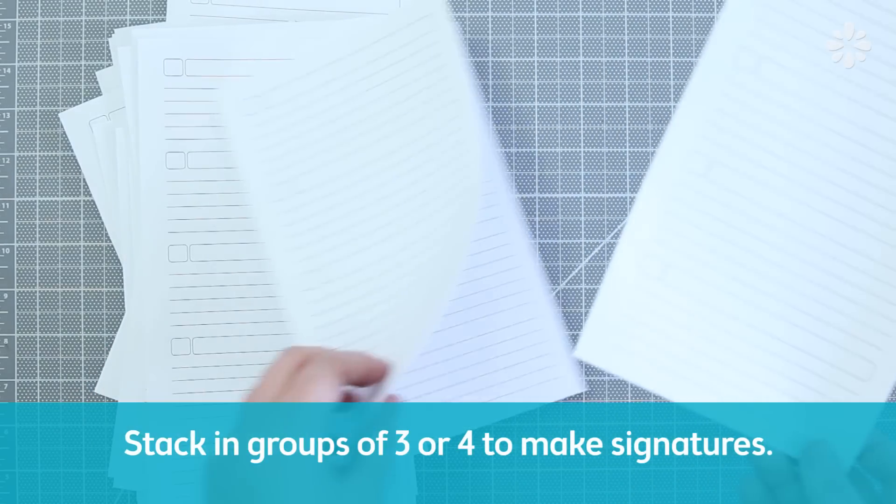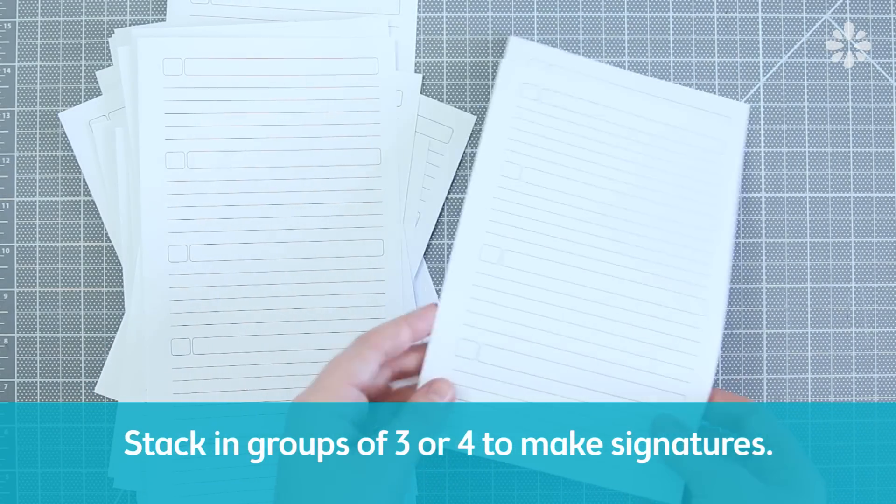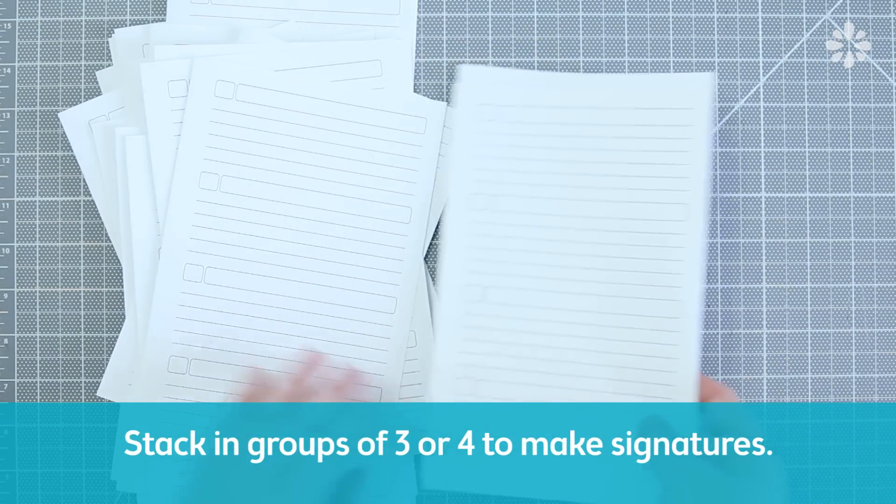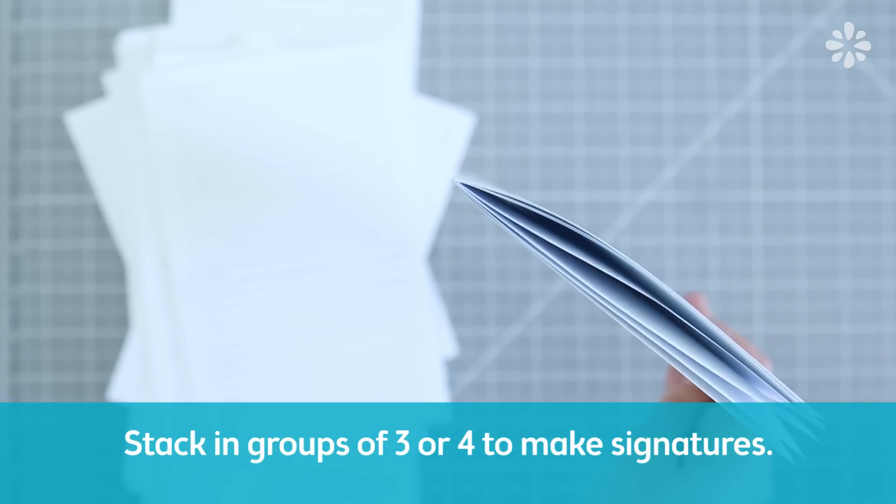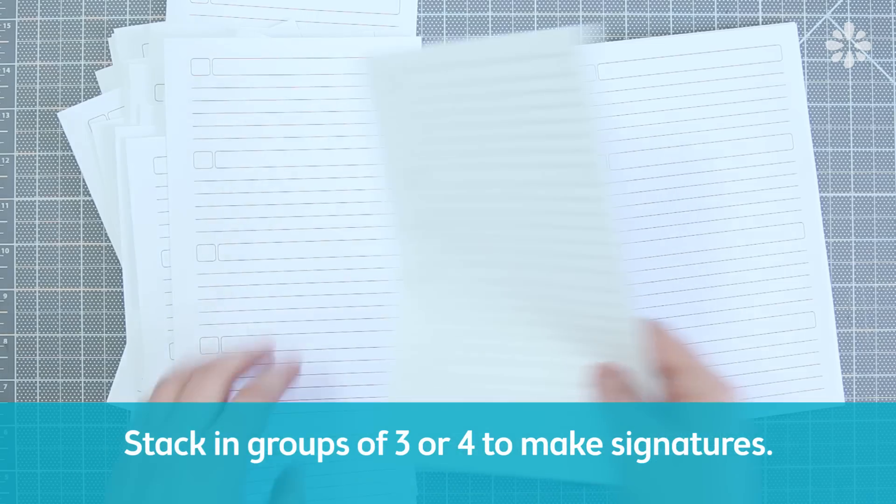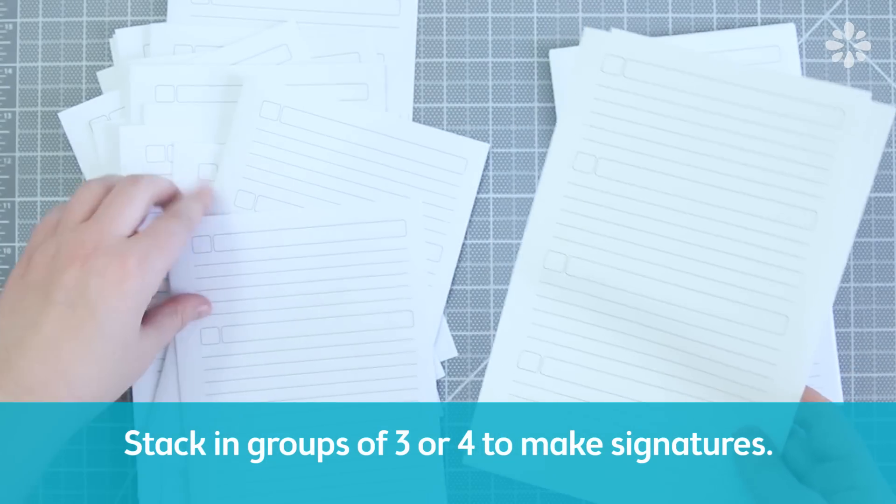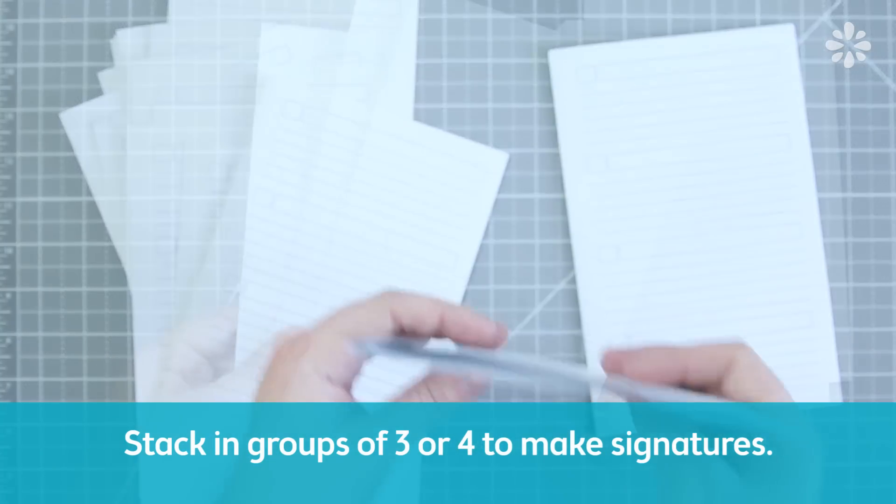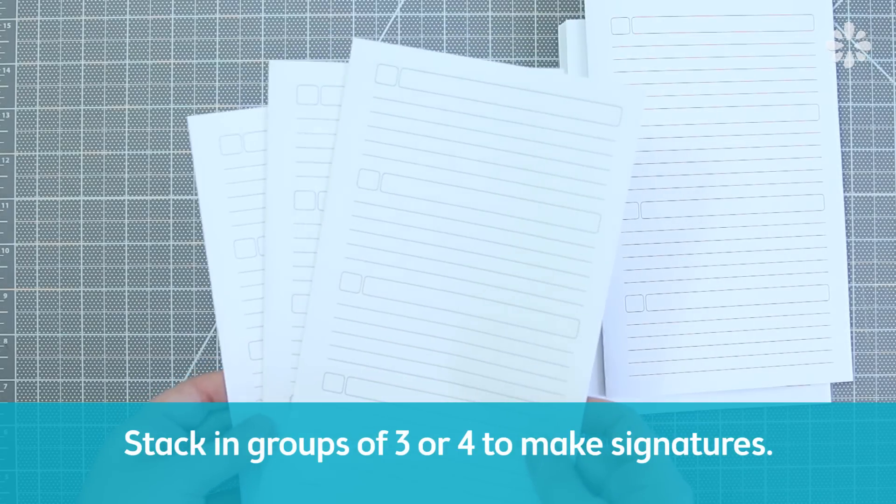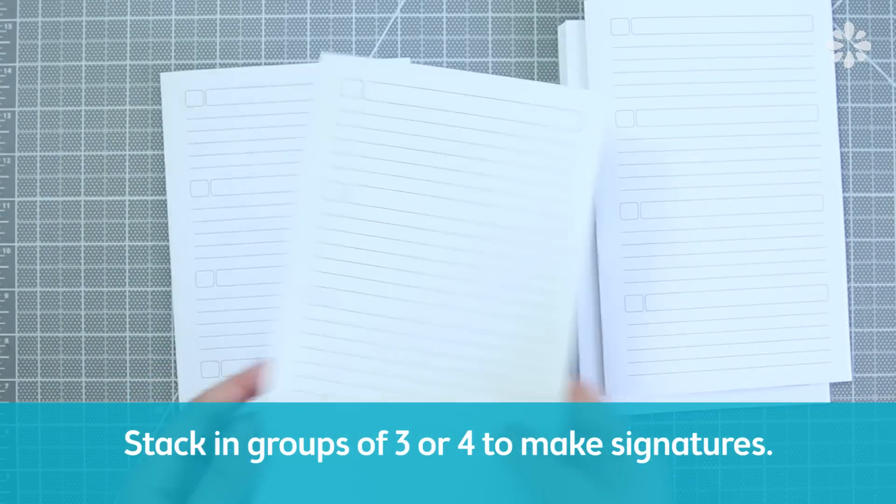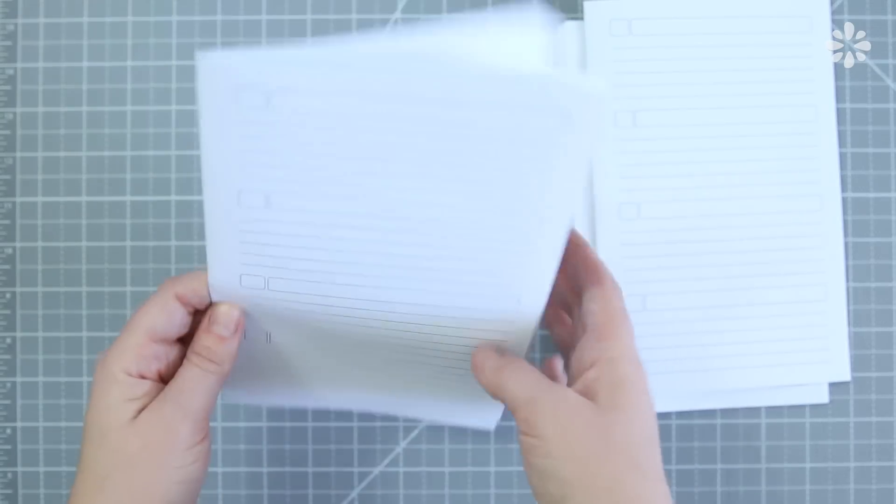After those are folded, now stack each page in groups of four to make signatures. If you've made your own custom paper with dates, of course you want to arrange it so all the days are in the right order. In this case, the template is blank so I can put them in any order. If you end up with an odd number of pages, you don't have to have exactly four pages to make a signature. You can just combine those, and that will be one signature.